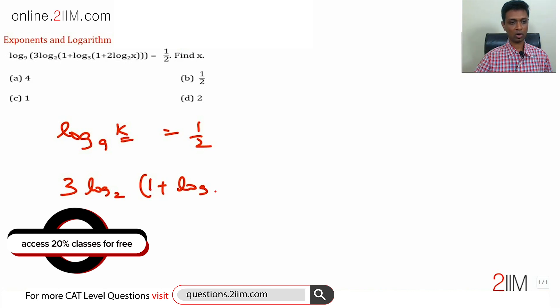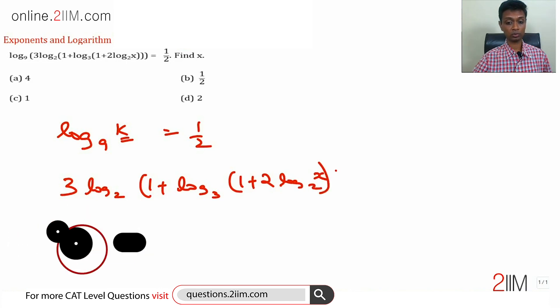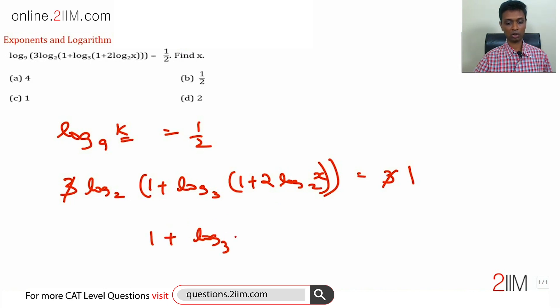This is equal to 3. Cancel this 3, this is 1. Or 1 plus log to the base 3 of 1 plus 2 log x to the base 2, this whole number should be equal to 2.